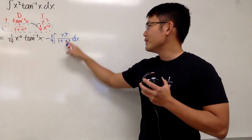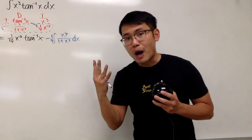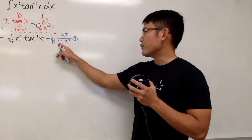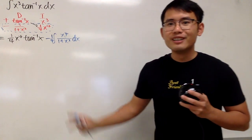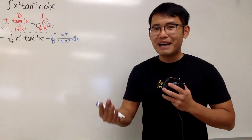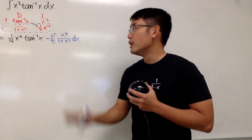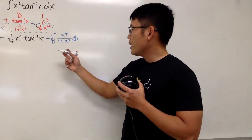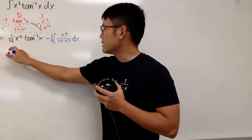Now, how can we deal with this integral? Well, on the top it's x to the fourth power and on the bottom we have 1 plus x squared. The degree on the top is too big, so we have to do long division to take care of that.